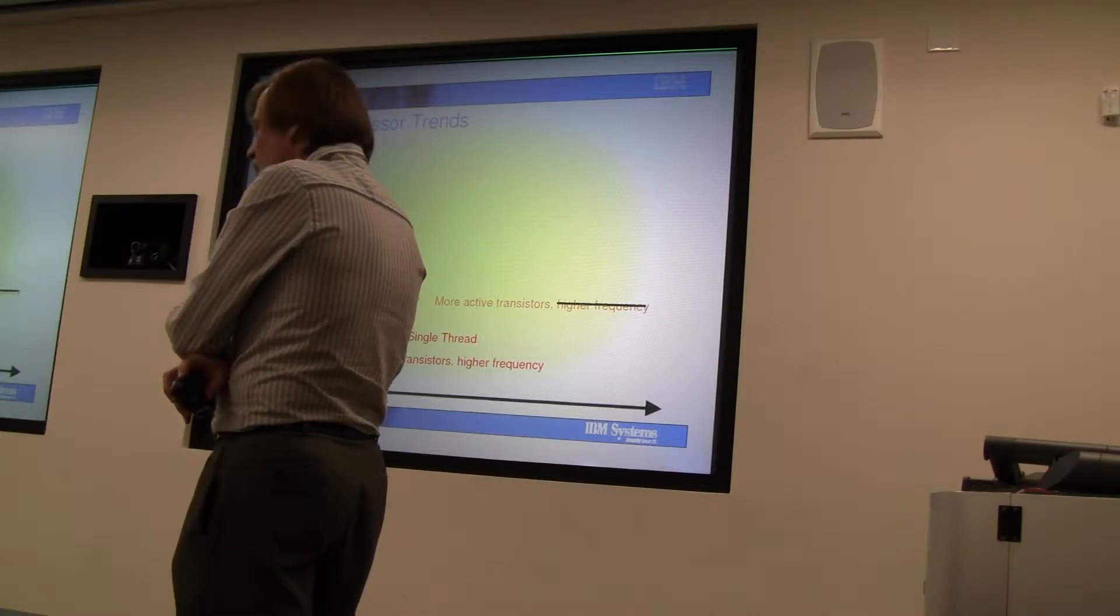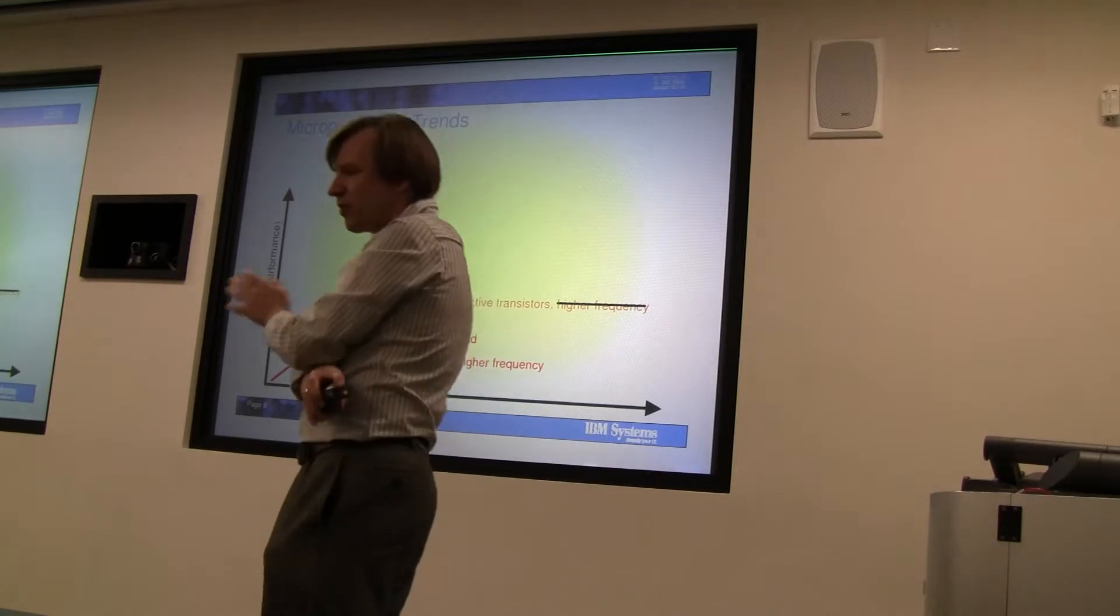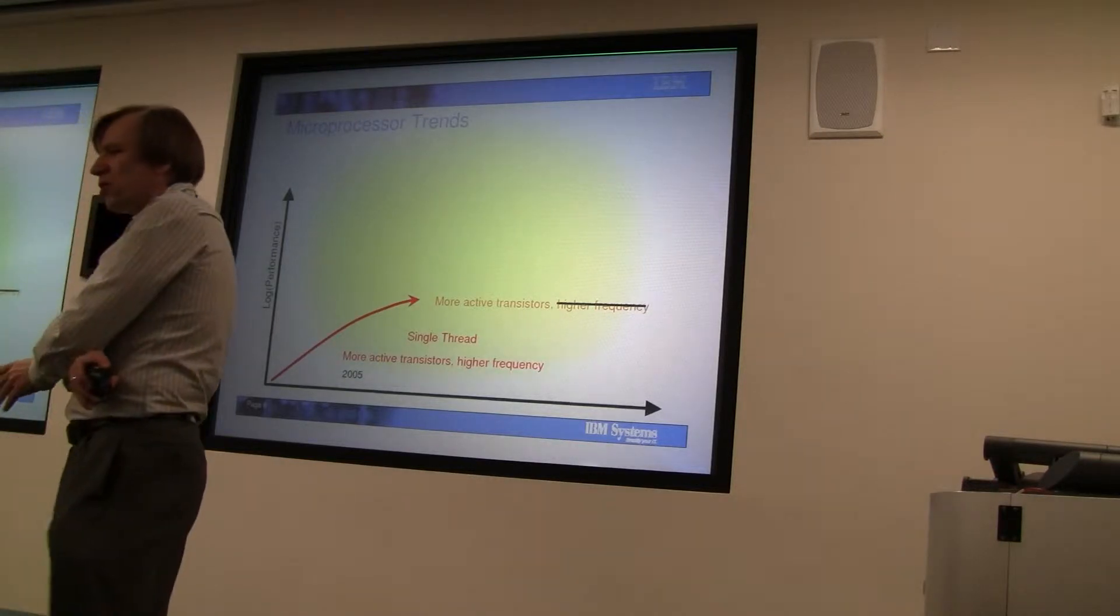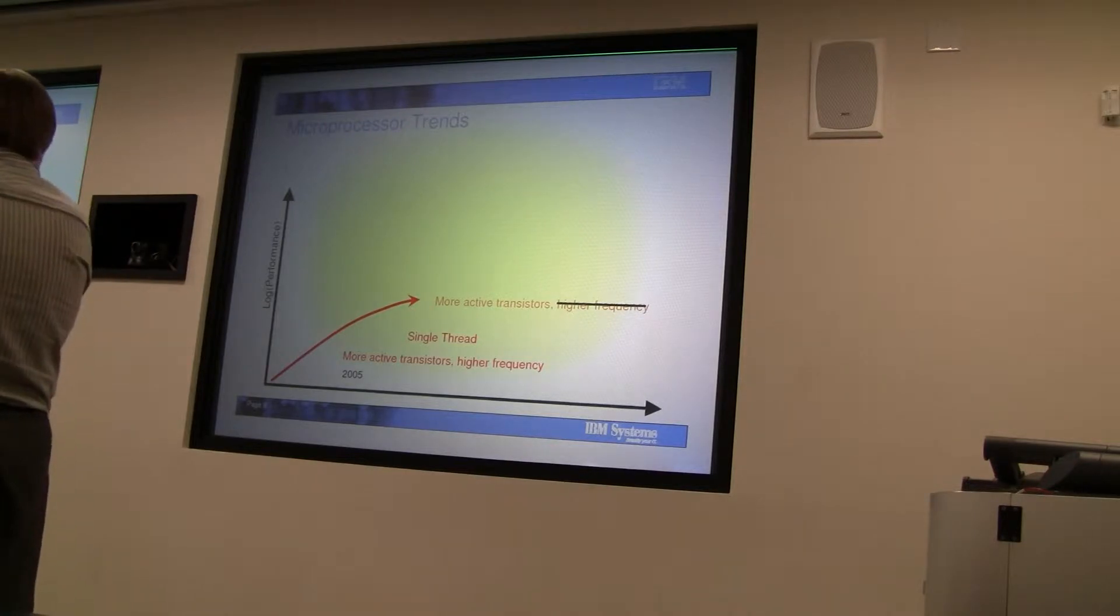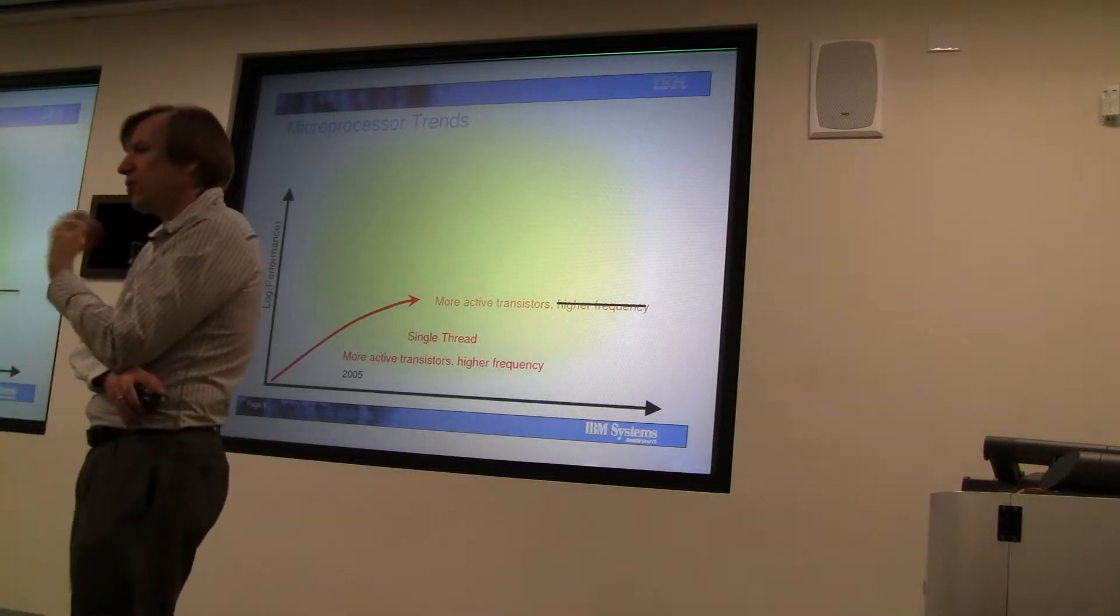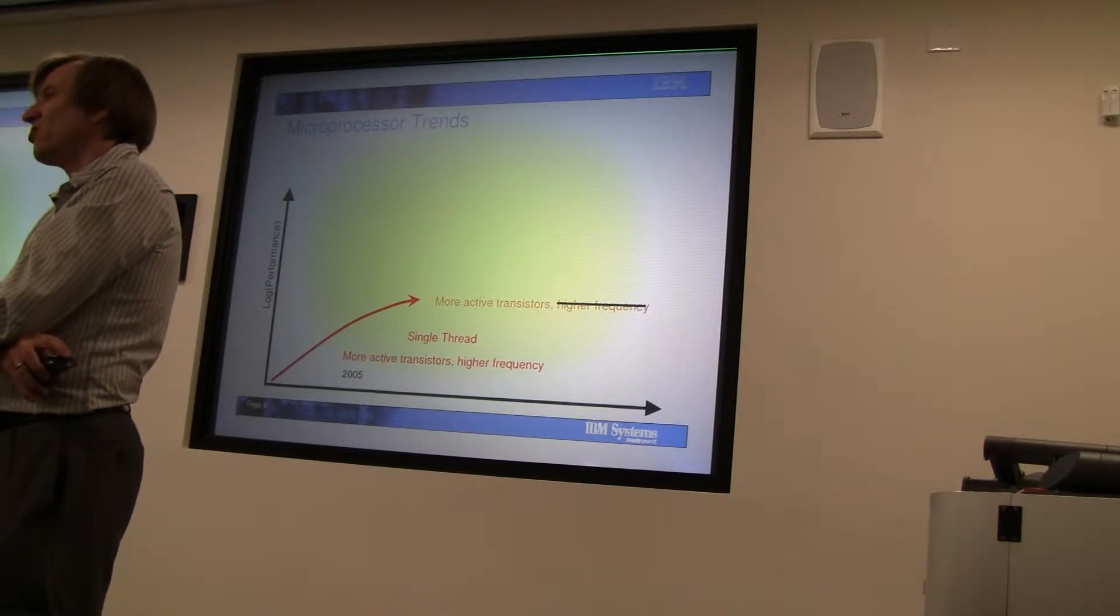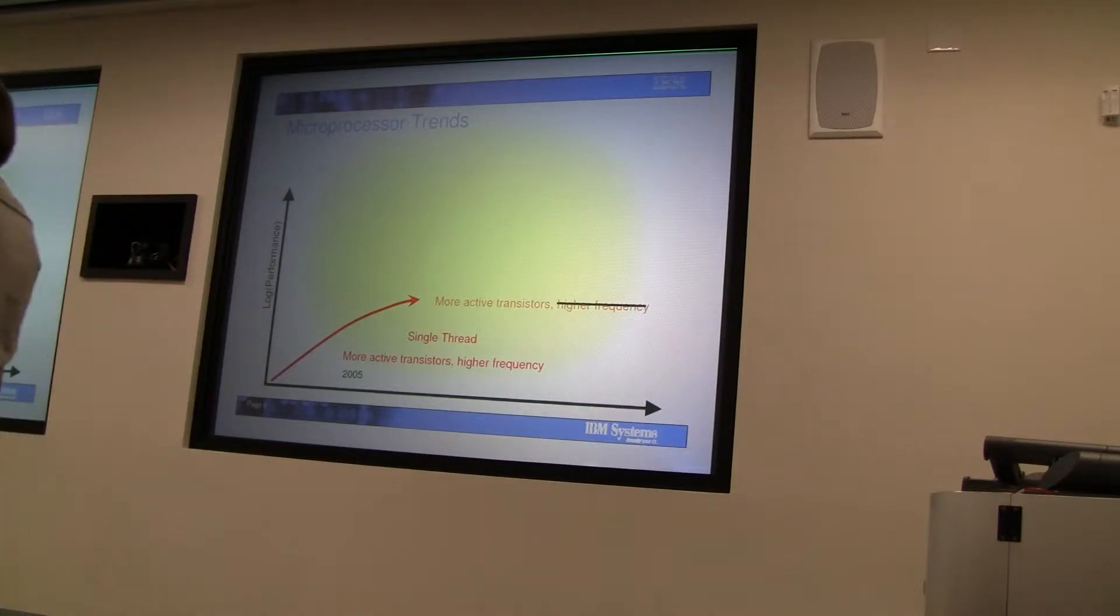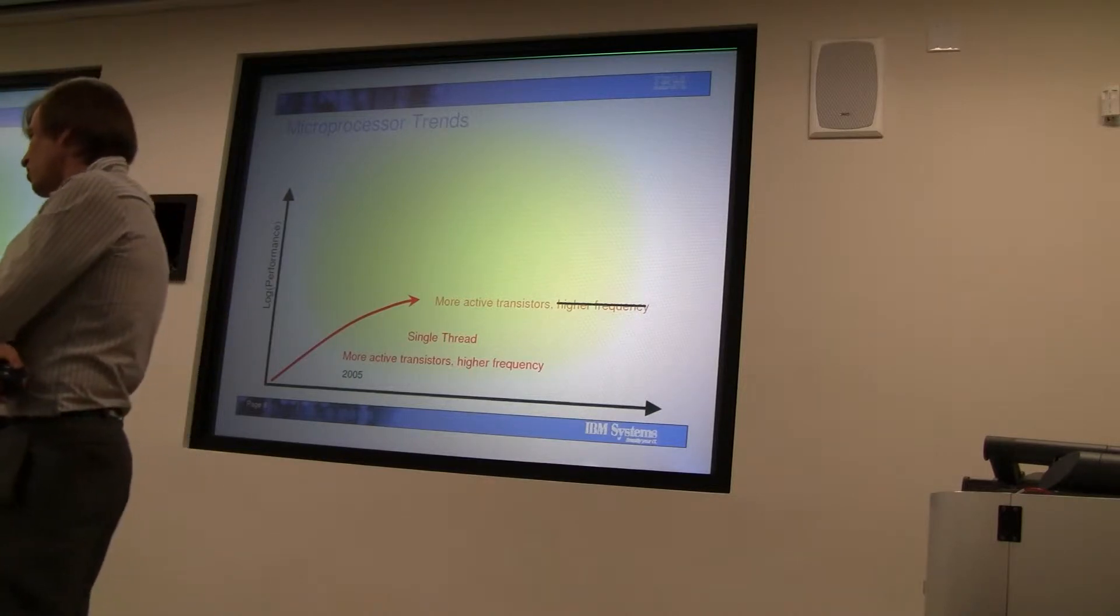Even though around this time we were playing with Cell - and I'll talk about Cell in a bit - the industry response to this was multi-core. Obviously, given what I told you before, if I give you twice as many transistors, yes, you can try to use them to make a faster single core, but a more efficient way to use them is to build two cores if your problems are parallel.